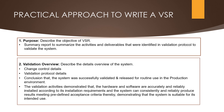The second component is the validation overview section. Here we need to describe the details overview of the system such as change control details — that is change control number, change control initiation and approval date. Next, we need to describe the validation protocol details — that is validation protocol number and its execution status. We also need to define the conclusion statement, that the system was successfully validated and released for routine use in the production environment.